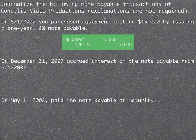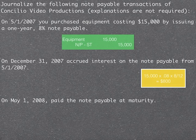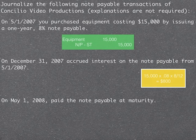On December 31st, 2007, we now have accrued interest on this note from May 1st, and we need to record that accrual. Remember, this follows the matching principle — you match expenses with the revenues those expenses helped create. The formula is always principal times rate times time. Also remember that interest rates are typically given on a yearly basis, so when it says eight percent, that means eight percent for the year.